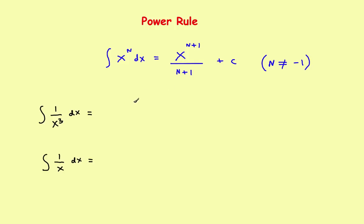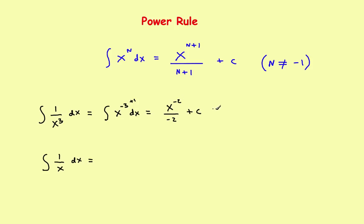We'll look at two examples. In this first example, the power rule will work, and in the second example the power rule will not work. For the first one, if you were going to find the antiderivative of 1 over x cubed, you take the x cubed and bring it from the denominator up to the numerator, making it x to the negative 3 dx. The rule says add 1, getting x to the negative 2 divided by negative 2 plus c. So the power rule works in this case.